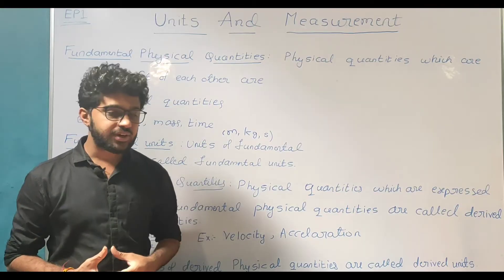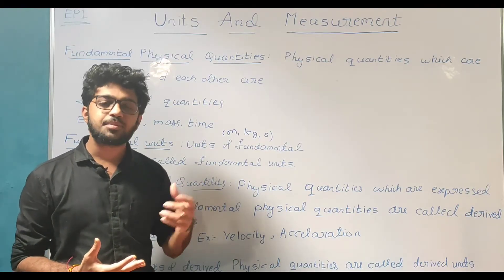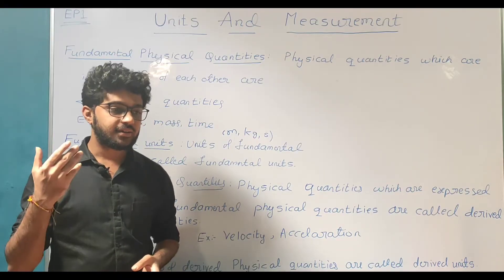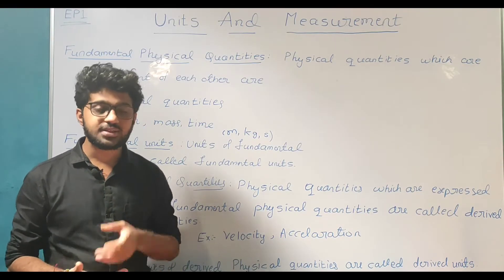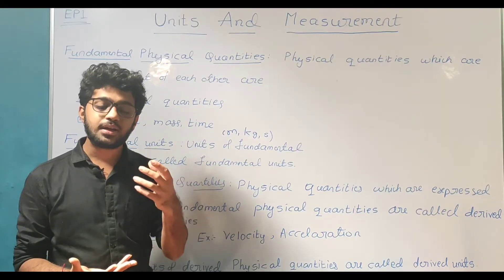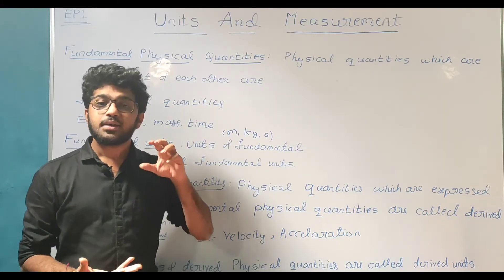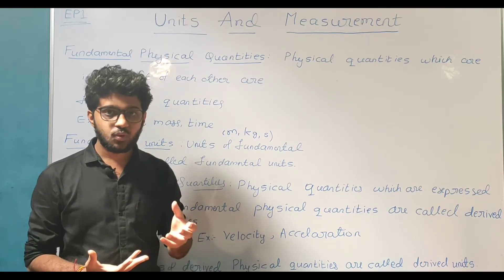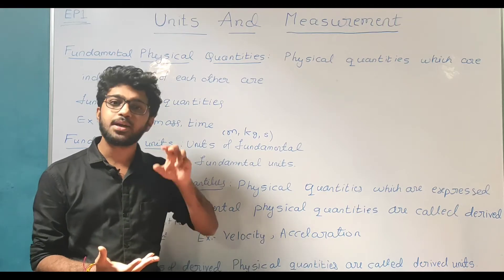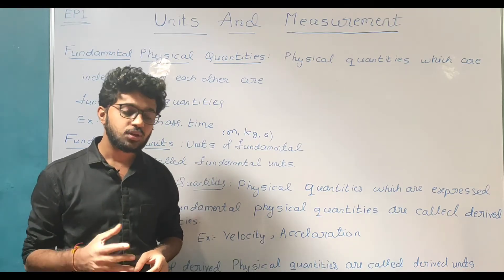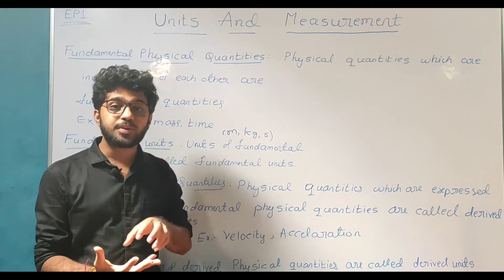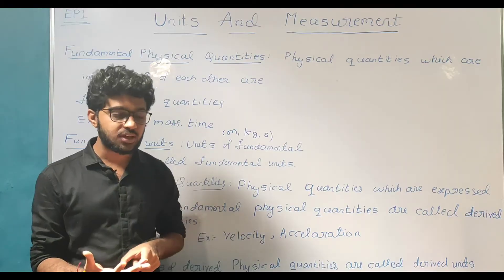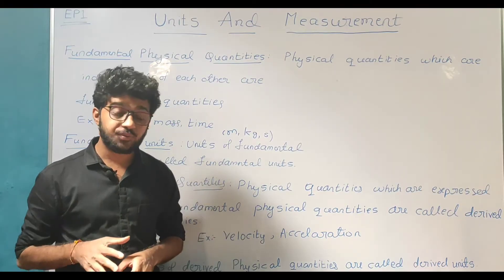We know many physical quantities: length, mass, time, temperature, velocity, acceleration, pressure, force, energy, and work. Among them, some can be expressed independently. However, there are some physical quantities that, in order to express them, we have to combine fundamental physical quantities. Such physical quantities — which are obtained by combining the fundamental physical quantities — are called derived physical quantities.